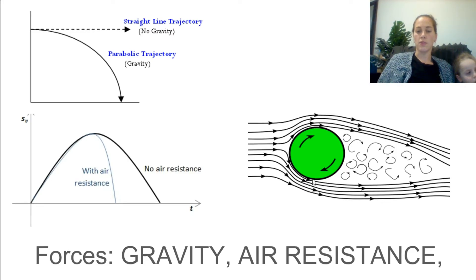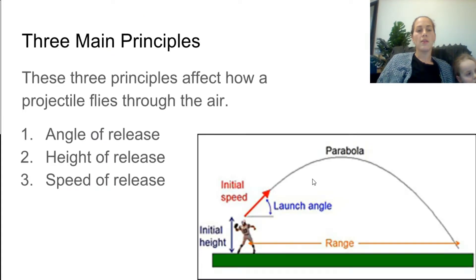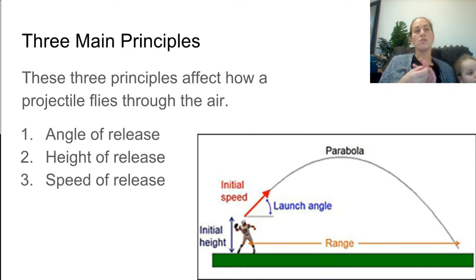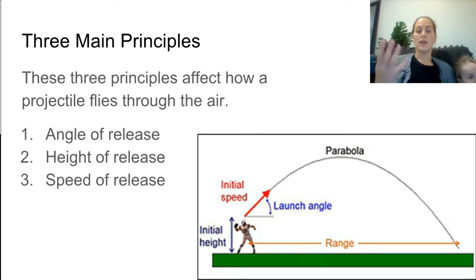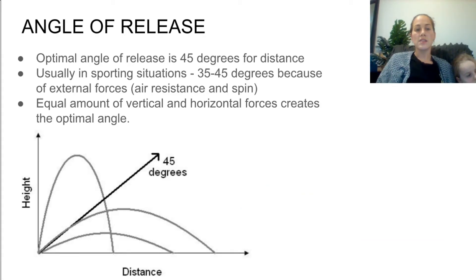There are three main principles that act upon a projectile. Without thinking about it — or sometimes deliberately — we utilize these three different principles to change how a ball or projectile flies through the air, whether we're aiming for distance or speed. The three factors are: angle of release, speed of release, and height of release.